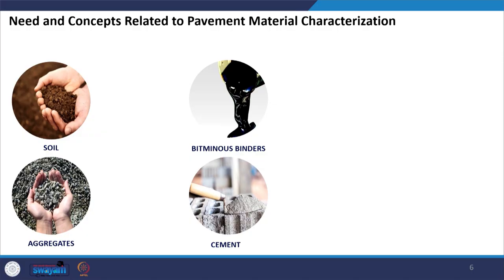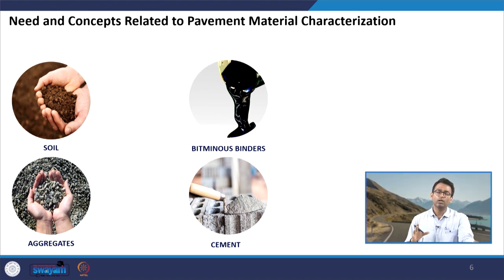These are some of the materials. My intention was just to familiarize you with a visual idea of these materials. Some basic materials used in construction include soil, bituminous binders, aggregates, cement, and various other materials — but these are the very primary materials used in construction.